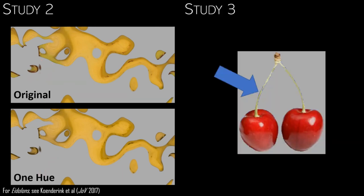And in a third experiment, we showed that observers were able to identify the one hue images when we showed them what to look for, such as the stem in case of the cherries here.